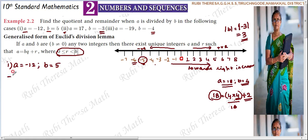Now for the first subdivision: minus 12 is our dividend and 5 is our divisor. We apply the statement A equals BQ plus R, so minus 12 equals 5 into Q plus R.